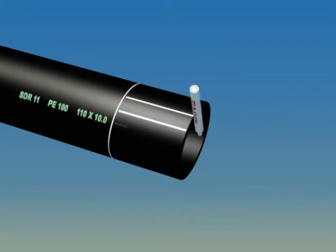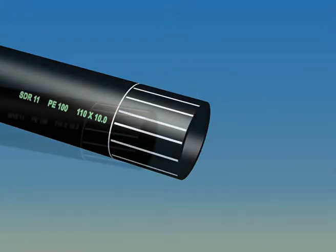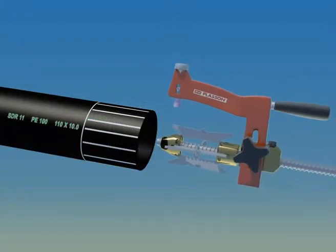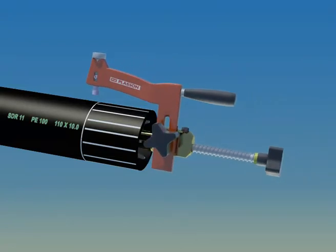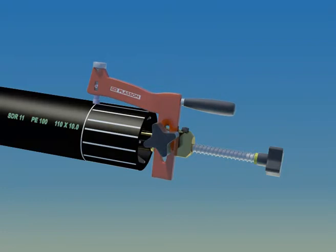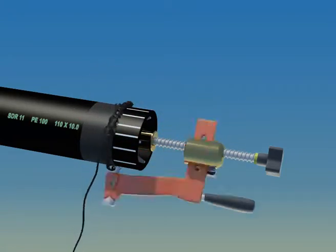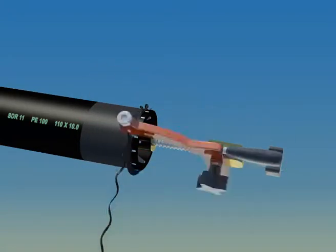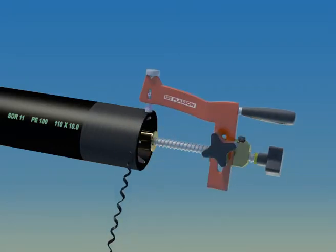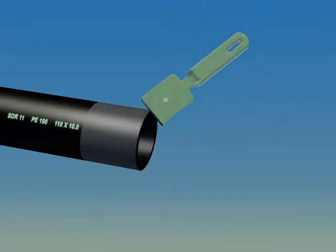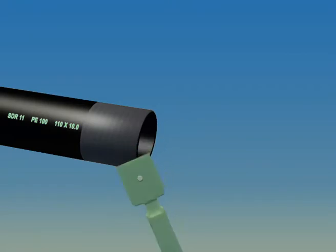Mark the pipe this way when using a rotational scraper. Make sure all the marks disappear and don't forget to chamfer the pipe end to remove the sharp edges.